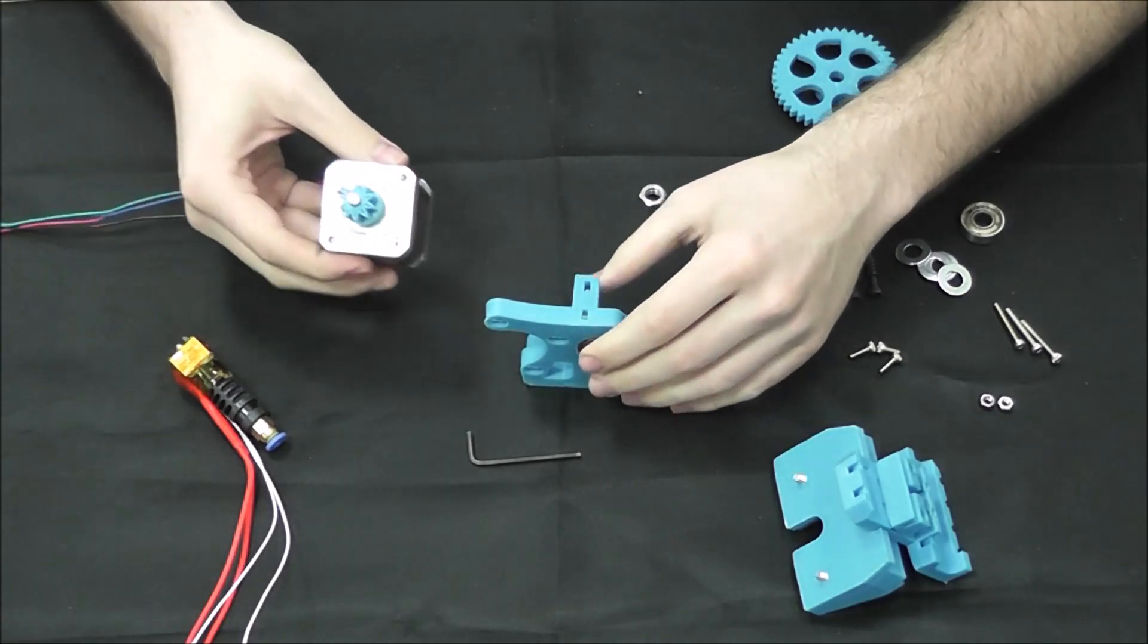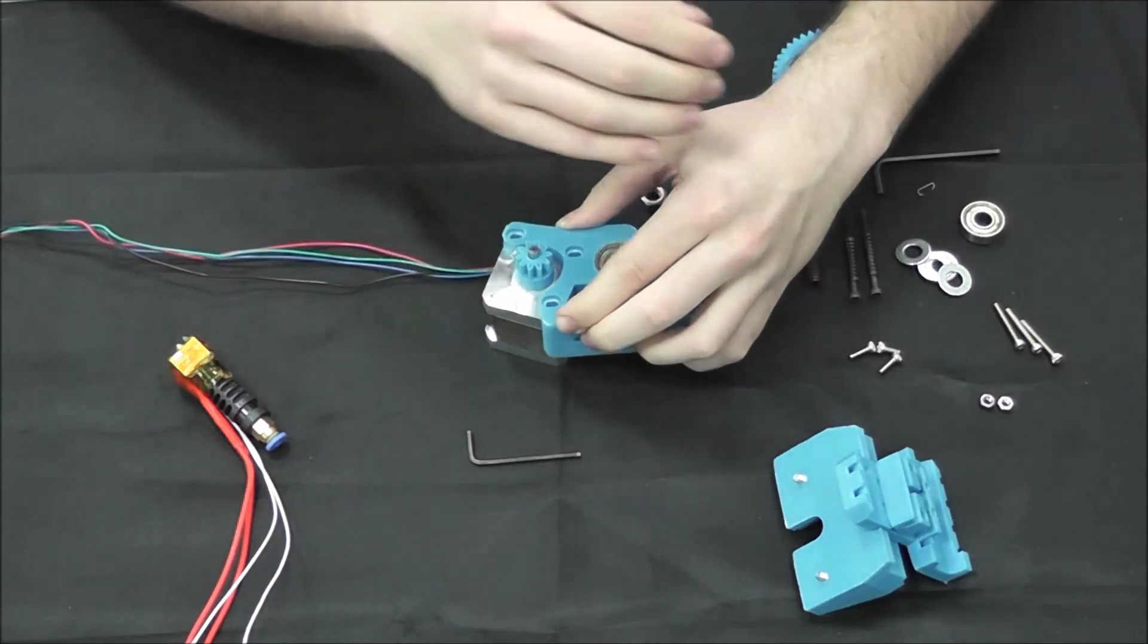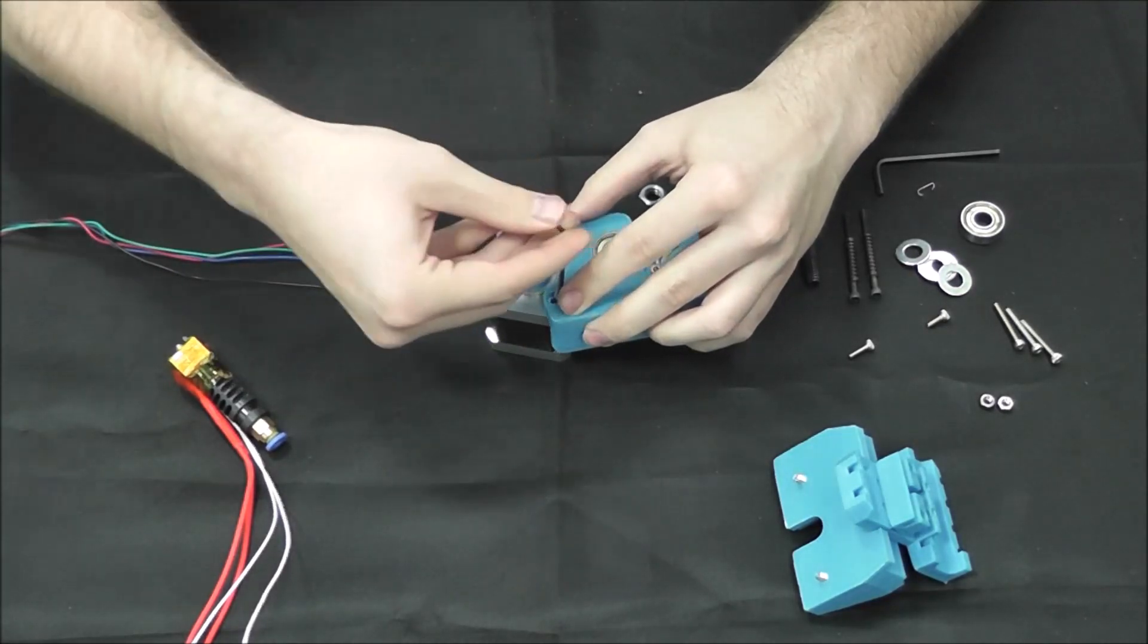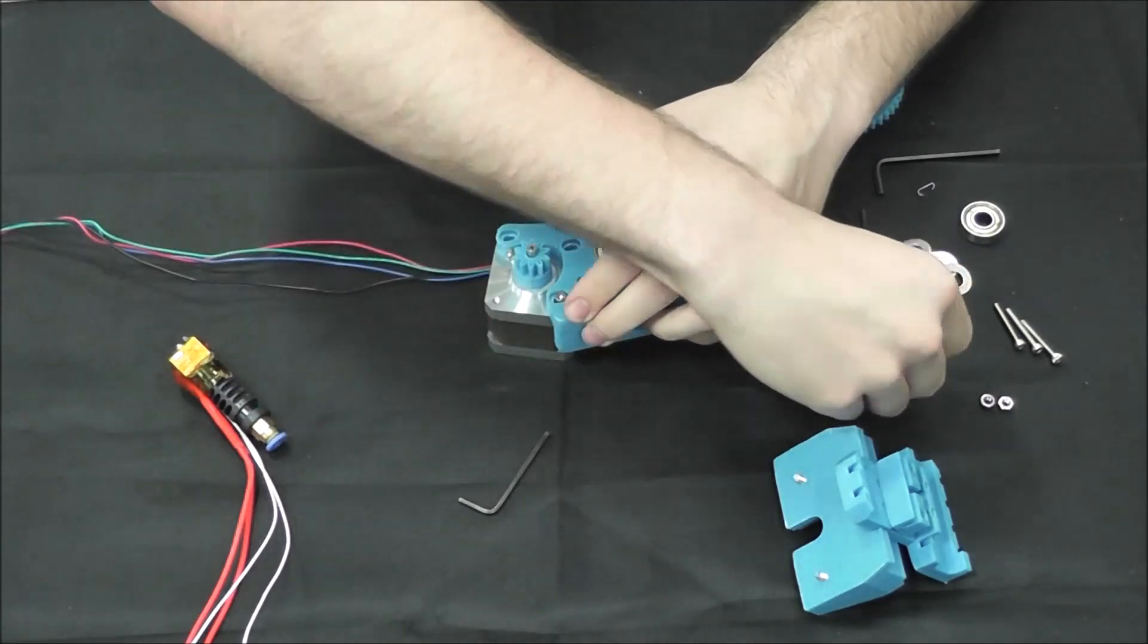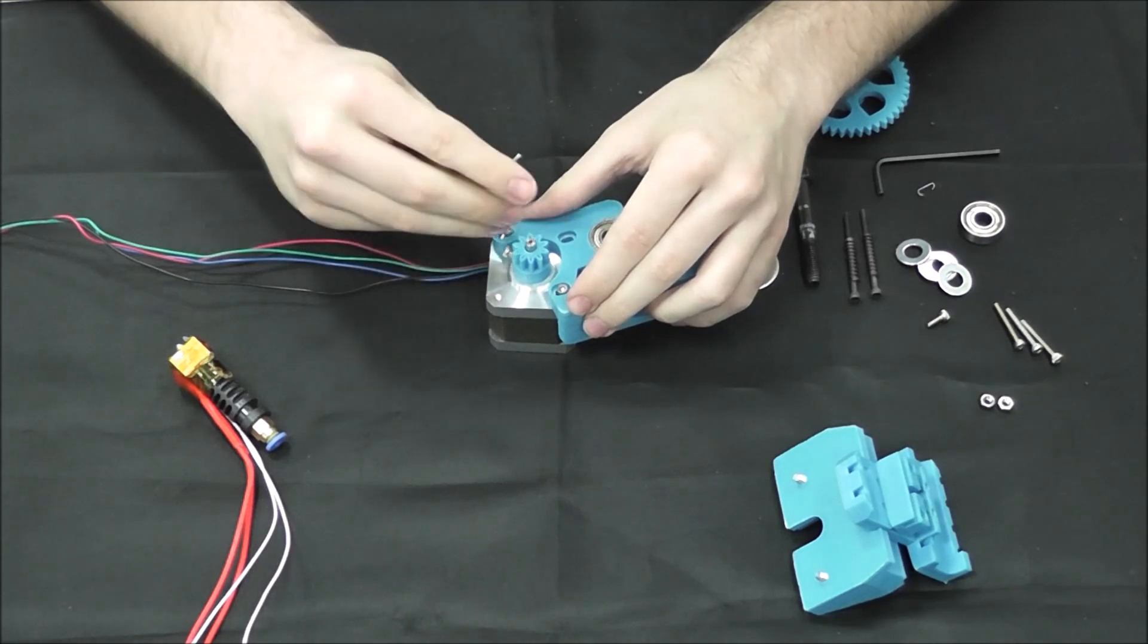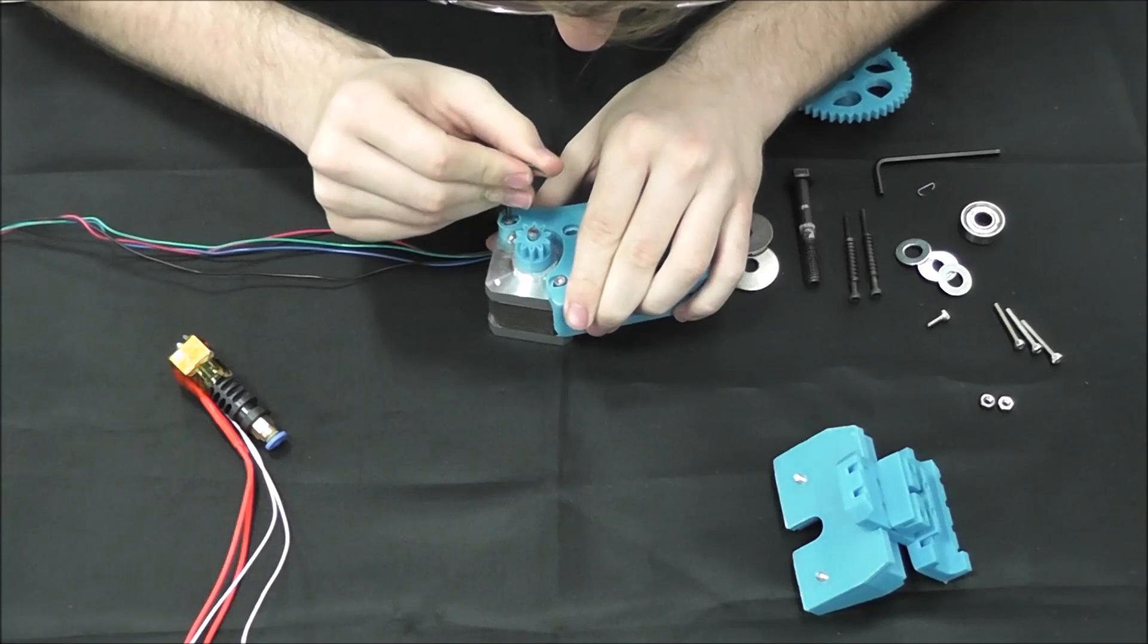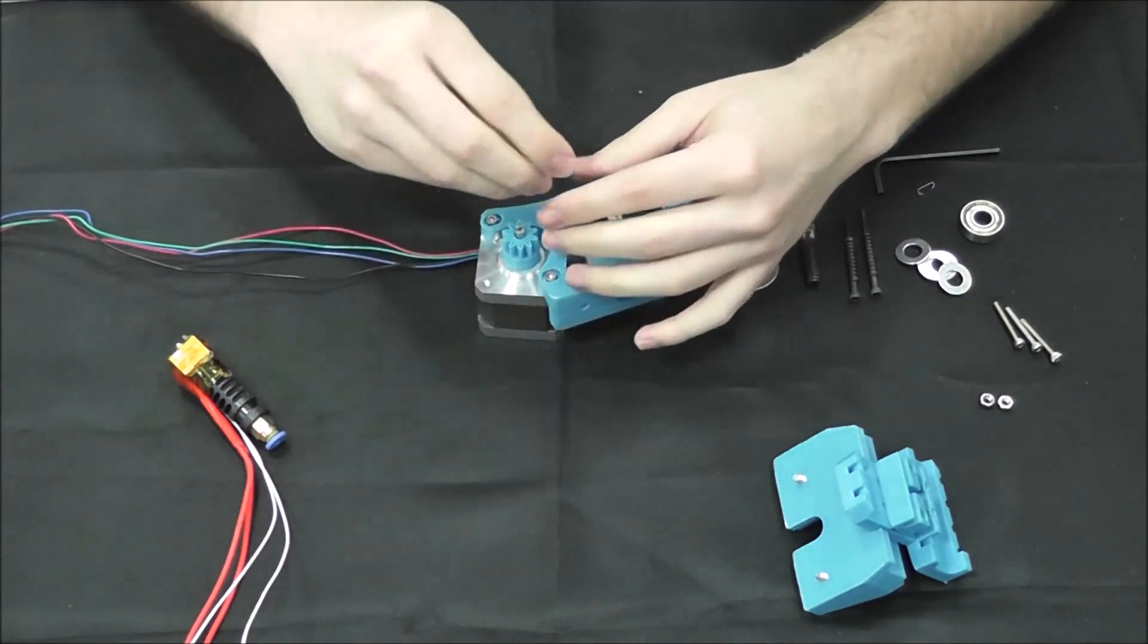Next, we're going to mount the motor with the shaft facing the back side of the assembly and use our M3 10mm to attach the motor to the body. Go ahead and loosely tighten them to start off with, just to get them threaded. You can go back and tighten them later just after you make sure everything's lined up.